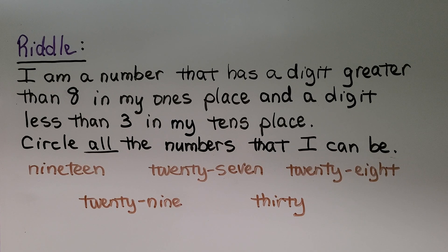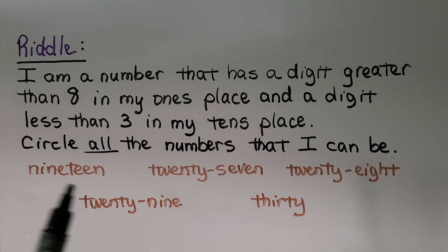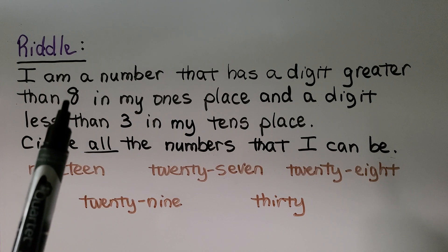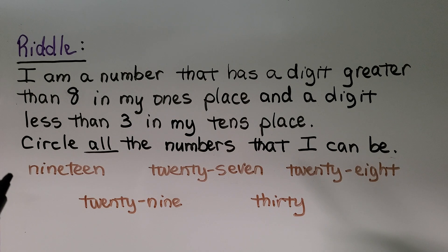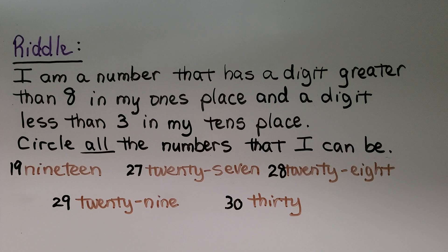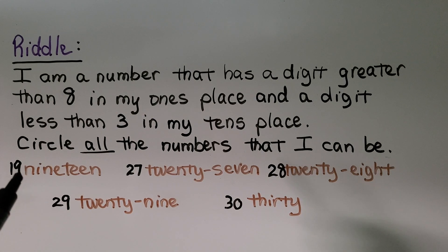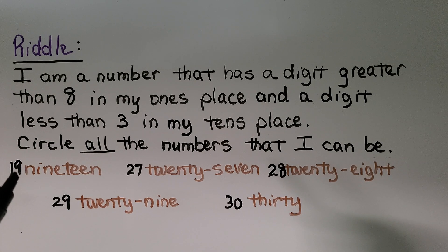Here we have a riddle: I am a number that has a digit greater than eight in my ones place and a digit less than three in my tens place. Circle all the numbers that I can be. Reading 19: nine is greater than eight in the ones place, and one in the tens place is less than three, so 19 fits.